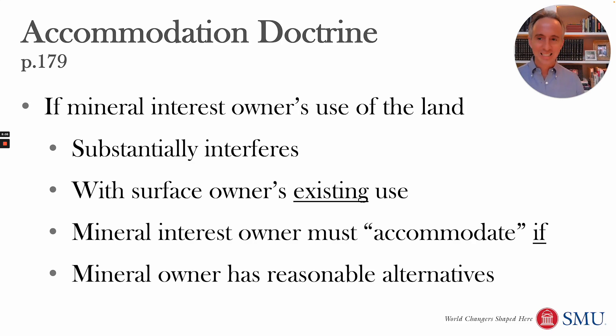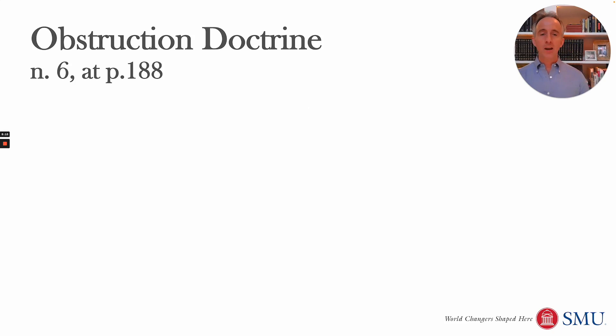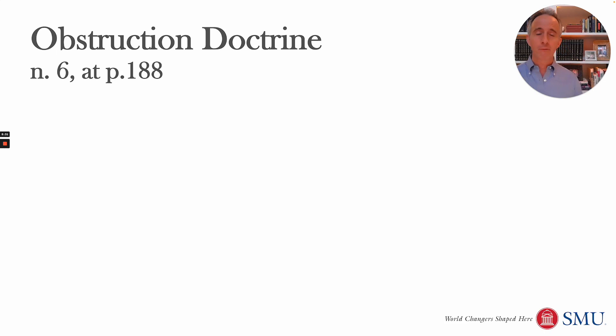The accommodation doctrine is often going to protect the landowner's structures. On the flip side, what happens if the landowner resists the oil and gas company's implied right to come on and produce oil and gas? It turns out that the landowner often has a practical ability to make things very difficult for the oil and gas company — blocking access to roads, making it very hard to get equipment on, etc.